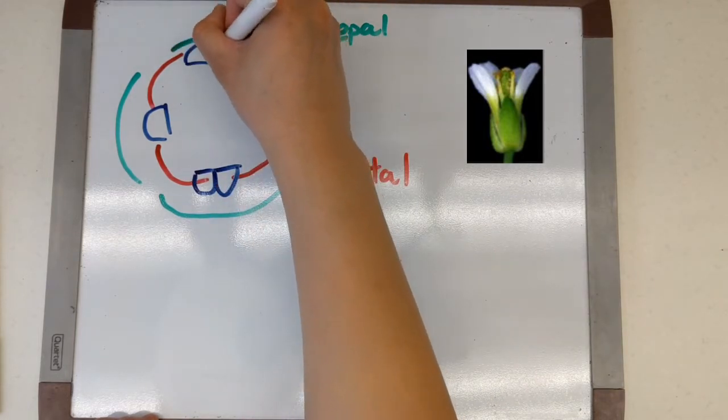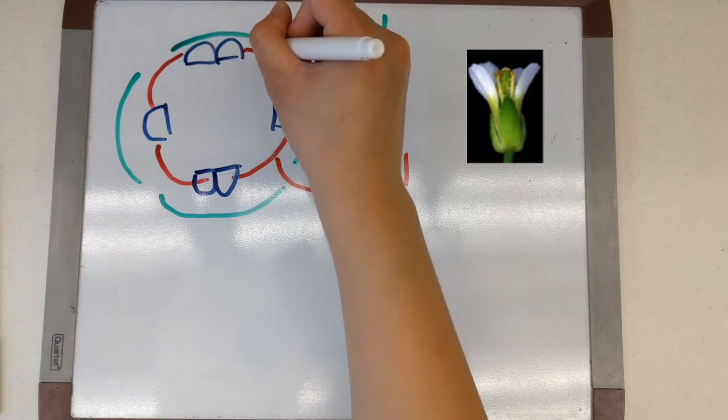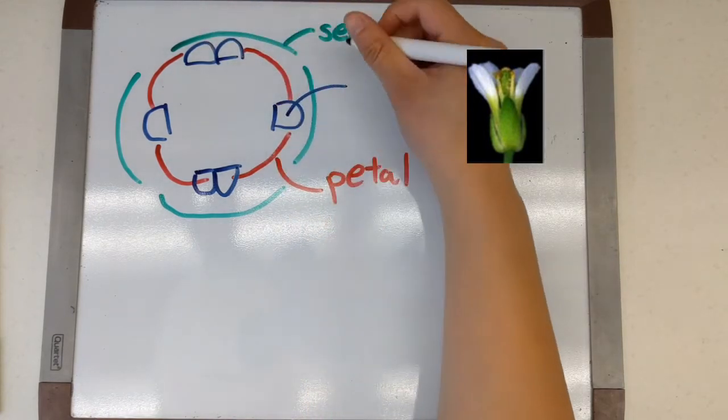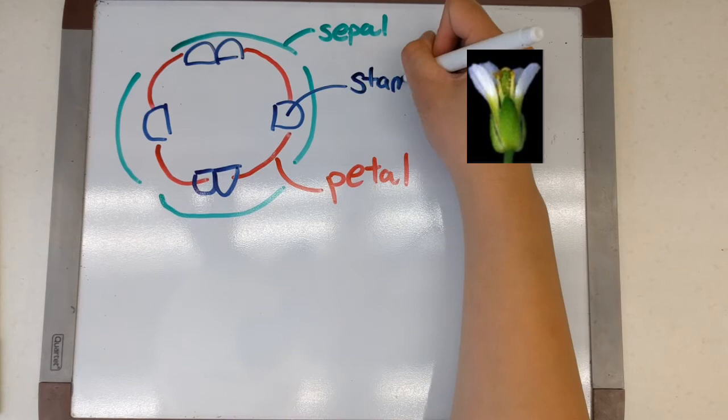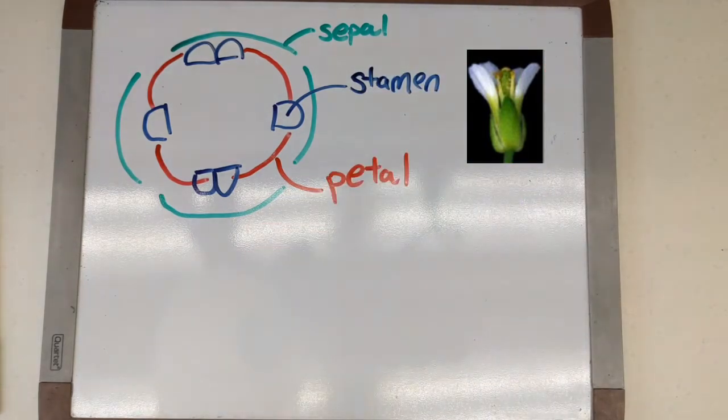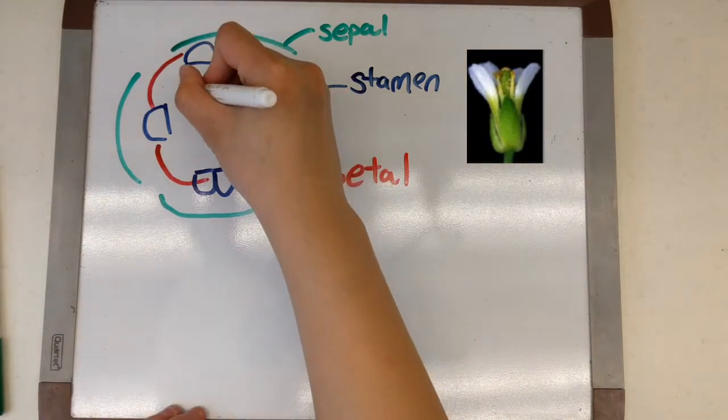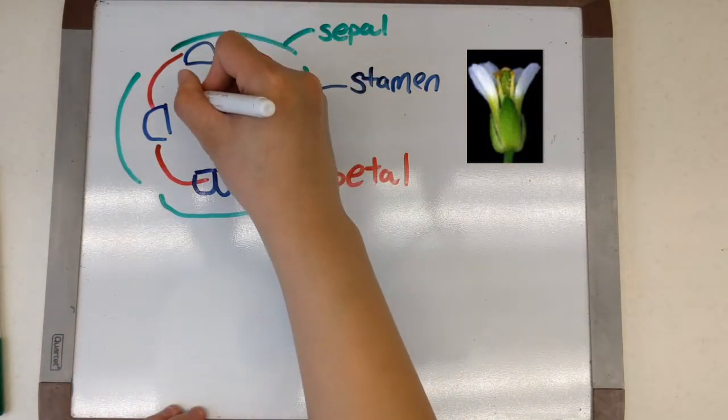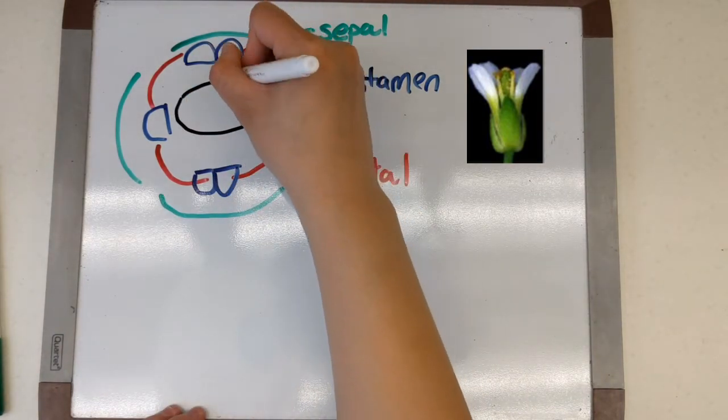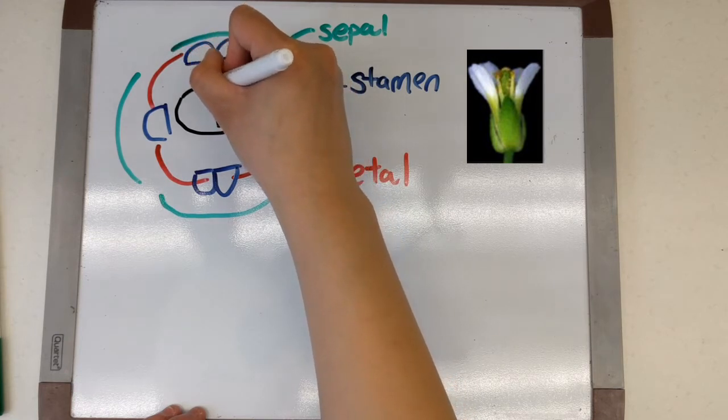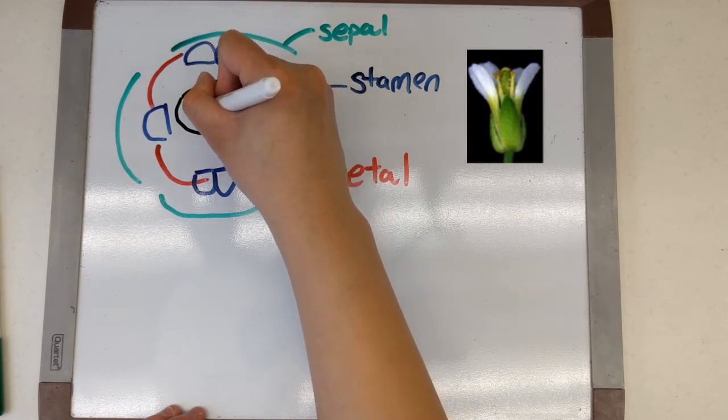Next we have the stamen. So most flowers possess both male and female reproductive structures. Stamens are the male reproductive structures and possess pollen. And then finally in the middle we have the carpals. These are the female reproductive structures.